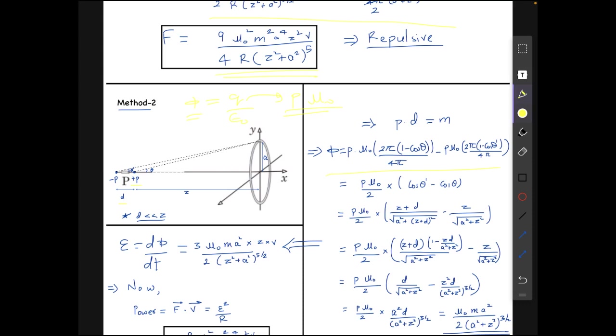The flux due to the monopole plus P can be written as P times mu not times the solid angle of the ring subtended over the total solid angle in all directions, which is P times mu not times 2pi times 1 minus cos theta over 4pi. Similarly for the monopole minus P, the flux will be minus P times mu not times 2pi times 1 minus cos theta dash over 4pi, where theta and theta dash are the angles subtended by the ring at point plus P and minus P.